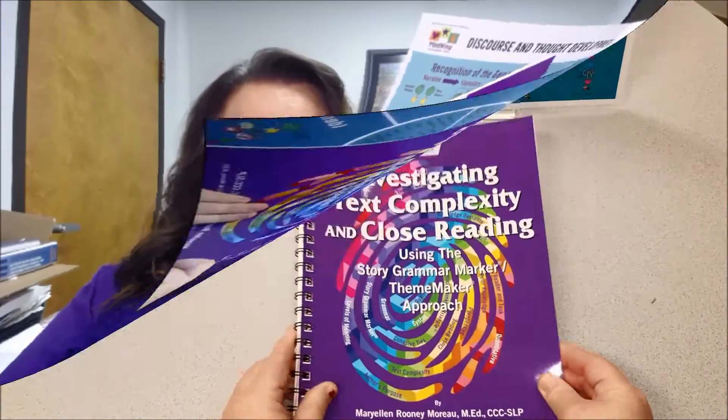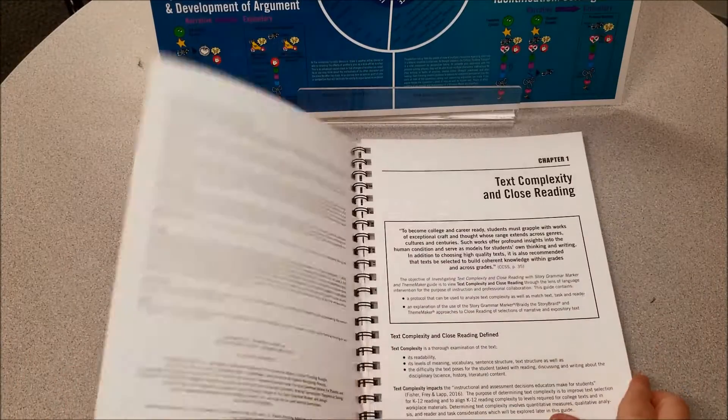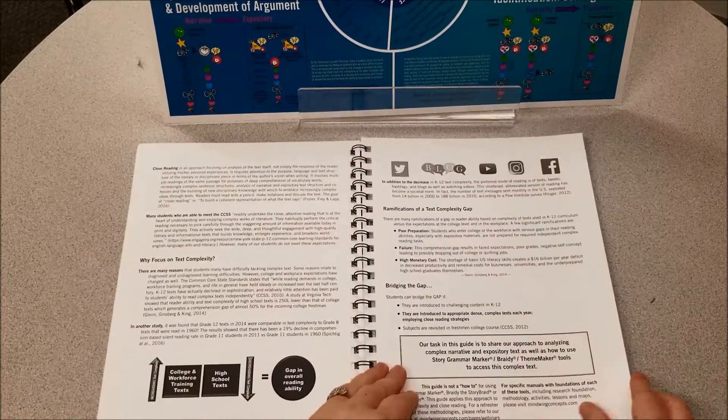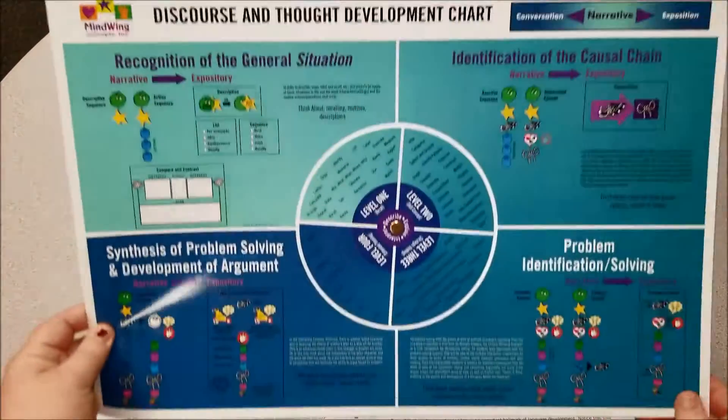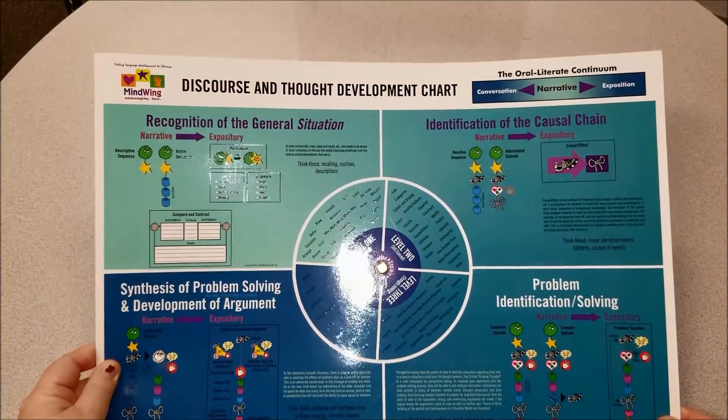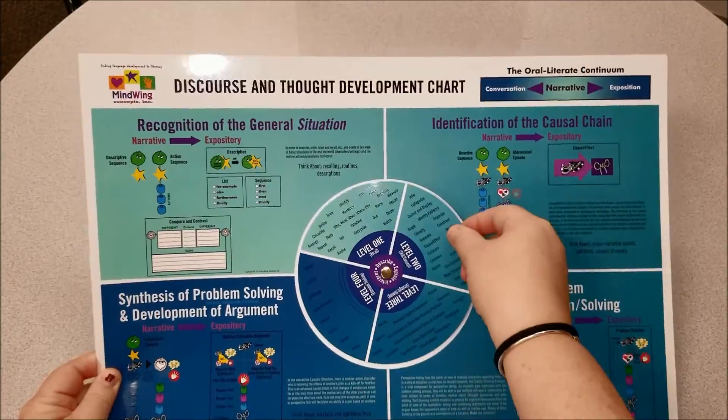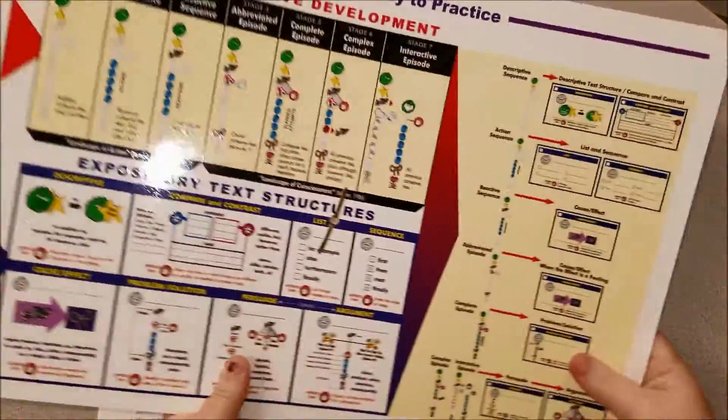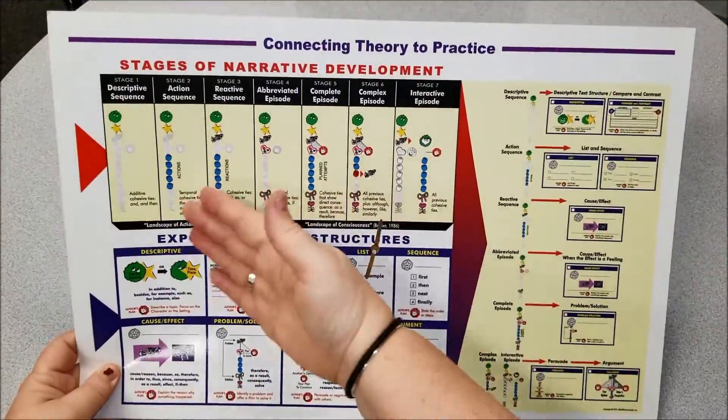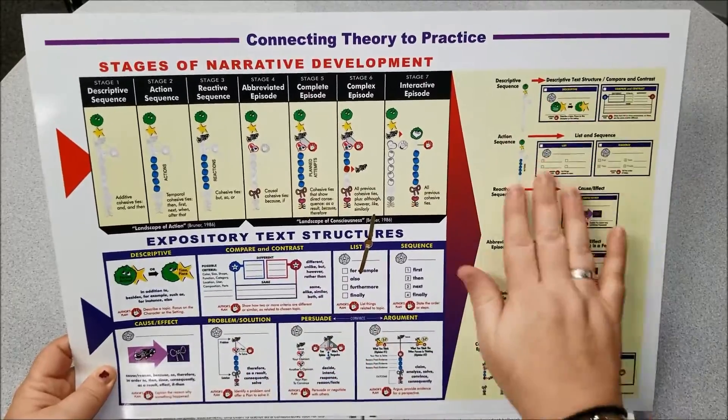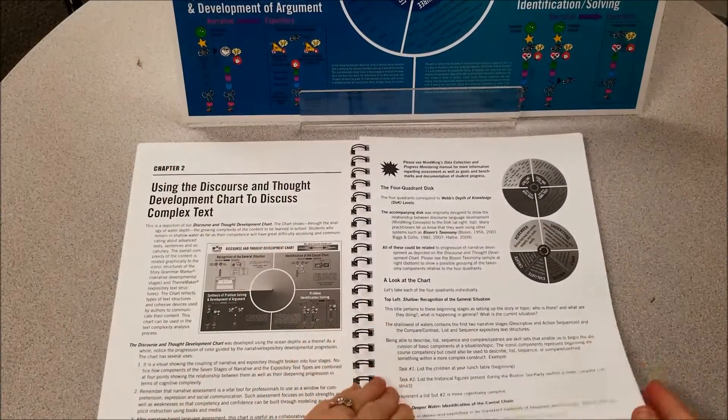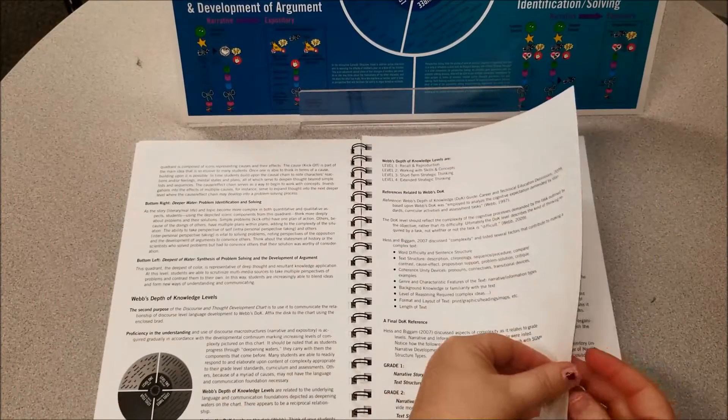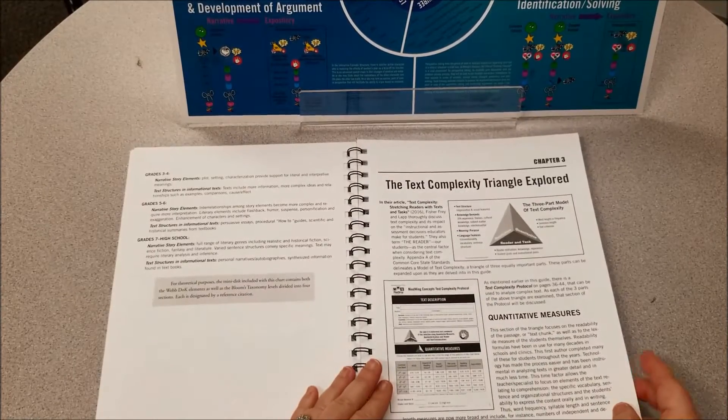The beginning of this book defines close reading and text complexity and talks about why we are focusing on it. Chapter two discusses our Discourse and Thought Development chart that focuses on complexity of content and how that relates to complexity of text. On the back of it, it even has the stages of narrative development, the expository text structures, and how those two combine in a trajectory.